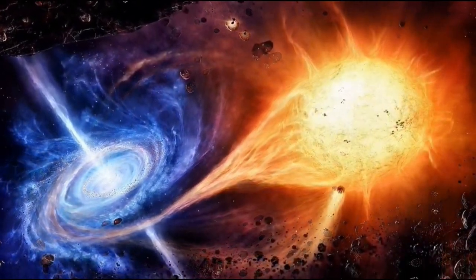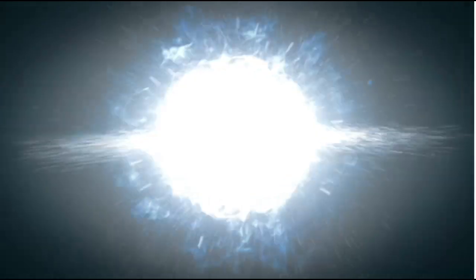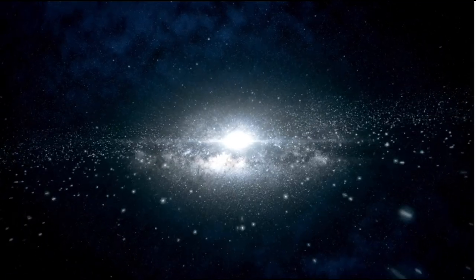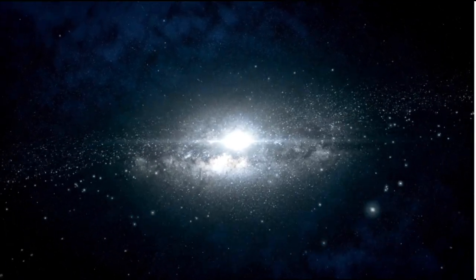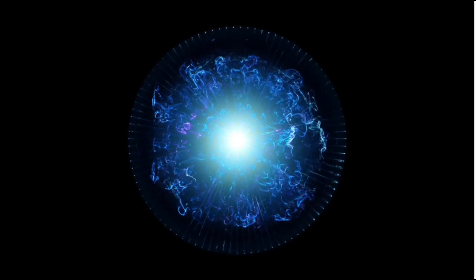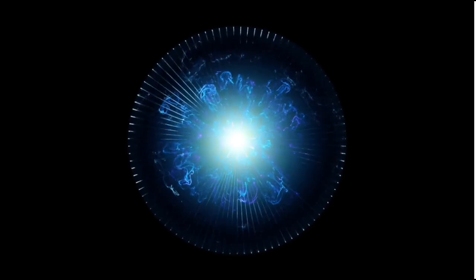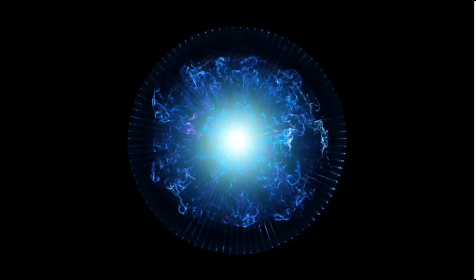That theory has a kind of extension called eternal inflation, which is that inflation essentially goes on forever and just stops in little patches. You imagine the fabric of the universe, space-time, stretch, stretch, stretch, and then it slows down and stops in little patches. Each one of those patches is basically a Big Bang and a universe of which ours is one. So you end up with this sort of picture of an infinite fractal universe, of basically an infinite number of Big Bangs, and that's called the inflationary multiverse.